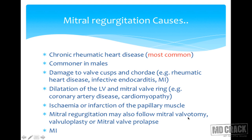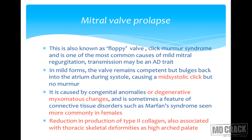Mitral regurgitation may also follow mitral valvotomy, valvuloplasty, or mitral valve prolapse. Mitral valve prolapse is also known as floppy valve or click murmur syndrome, and it is one of the most common causes of mild mitral regurgitation. Transmission of mitral valve prolapse is an autosomal dominant trait.